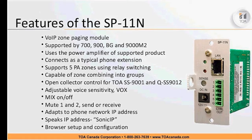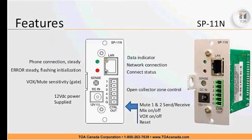We have mix on and off capability. Because we host the mute one and two send and receive capabilities, we can have this mix in with background music, or we can use the mute one and two bus as a send or receive device. It adapts easily to a phone network IP address — it's essentially a computer-type device that finds the network. When it finds the router address, it will provide an IP address and speak it out so you can hear exactly what address has been assigned. It is browser-based setup and configuration.